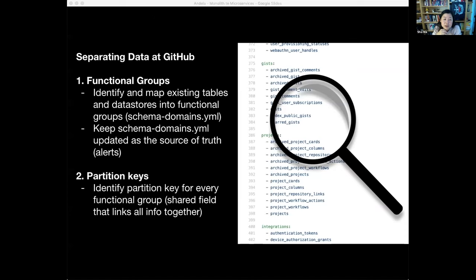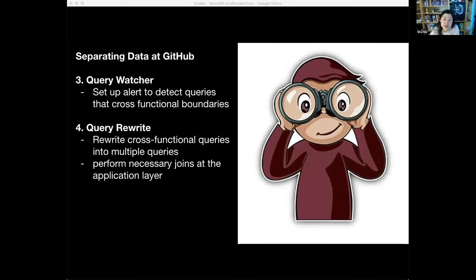Next, we identified a partition key for each schema domain. This is a shared field that links all the information together for a functional group. For example, the repository schema domain, which holds all the data related to repos, such as issues, pull requests, or review comments, use repo ID as the partition key. Creating functional groups of database schemas will eventually help us safely split the data into different servers and clusters needed for a microservices architecture. But first, we needed to fix the current queries that go across these functional boundaries so that we don't break the product when the data separation actually happens. At GitHub, we implemented a query watcher in the monolith to help detect and alert us anytime a query crosses functional domains. We would then break up and rewrite these queries into multiple queries that respect the boundaries of the domains and perform any necessary drawings at the application layer.